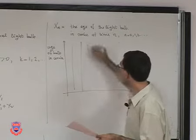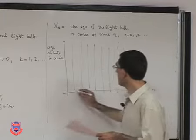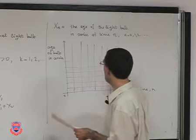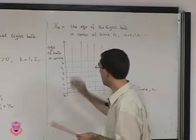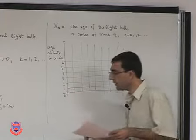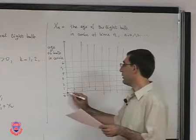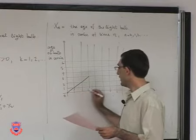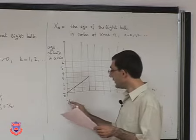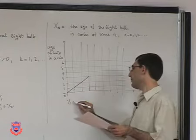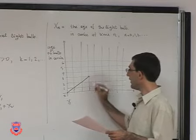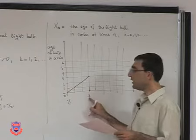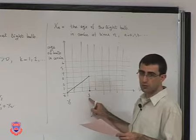The age can be as low as 0, going up to 1, 2, 3, 4, 5, 6, and so on. Initially, assume we placed a brand new light bulb. If the first bulb has lifetime Y_1 equal to 3, as soon as it fails we replace it with a new one. At time 3, we start with a new bulb, so its age at the beginning of period 3 is 0 — age 0 means it is brand new.